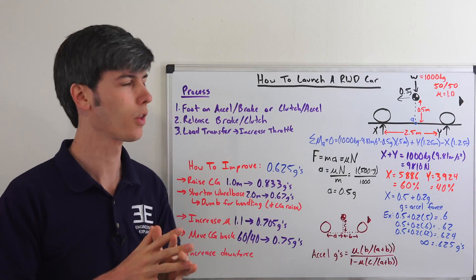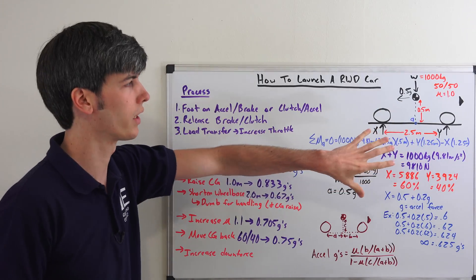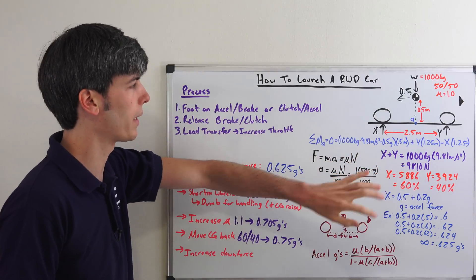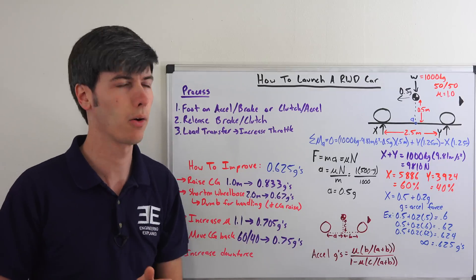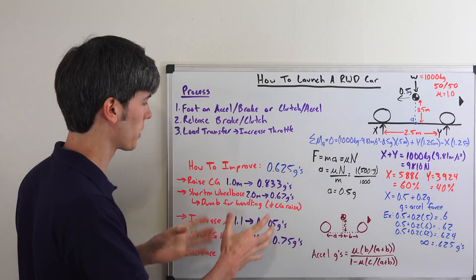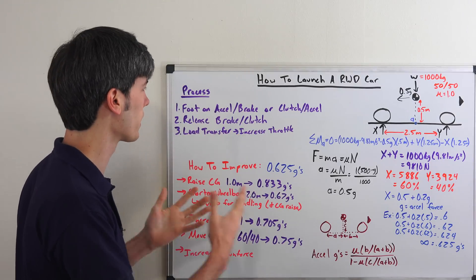We're going to break this down into three sections. First of all, what's the process? Second of all, what is the maximum you can accelerate a rear-wheel drive car? The maximum acceleration it can have based on the grip of the tire, not power. So we're just going to assume you have enough power to spin the tires. And then we're going to get into probably the most important part. How do you improve how fast your rear-wheel drive car can accelerate?